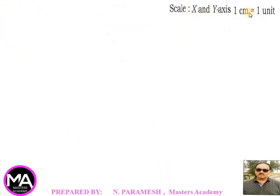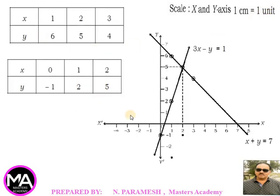Scale: x and y axis, 1 centimeter = 1 unit. xOx dash is x-axis, yOy dash is y-axis. Plot the first line through points (1,6), (2,5), (3,4) to draw x+y=7. Plot the second equation through (0,-1), (1,2), (2,5) for 3x-y=1. The two lines intersect at the common point x=2 and y=5.